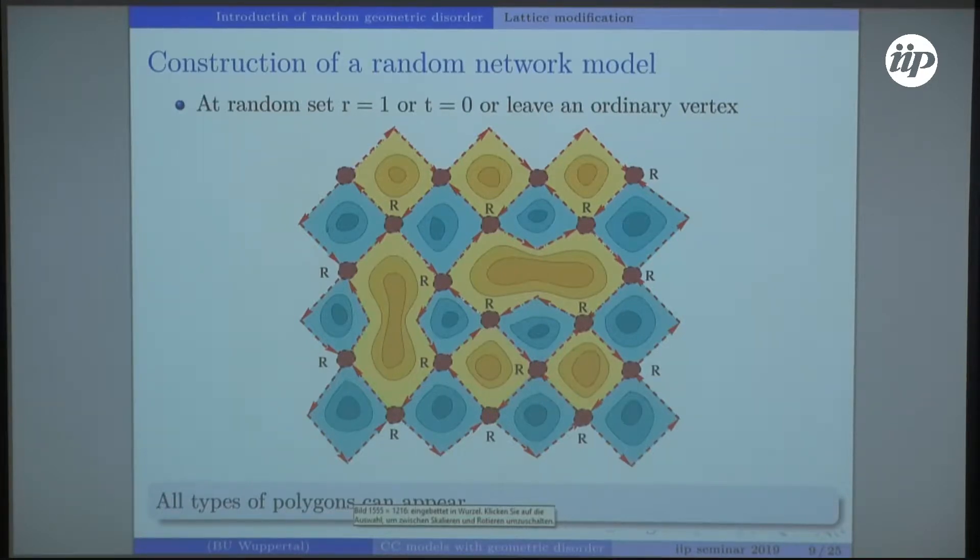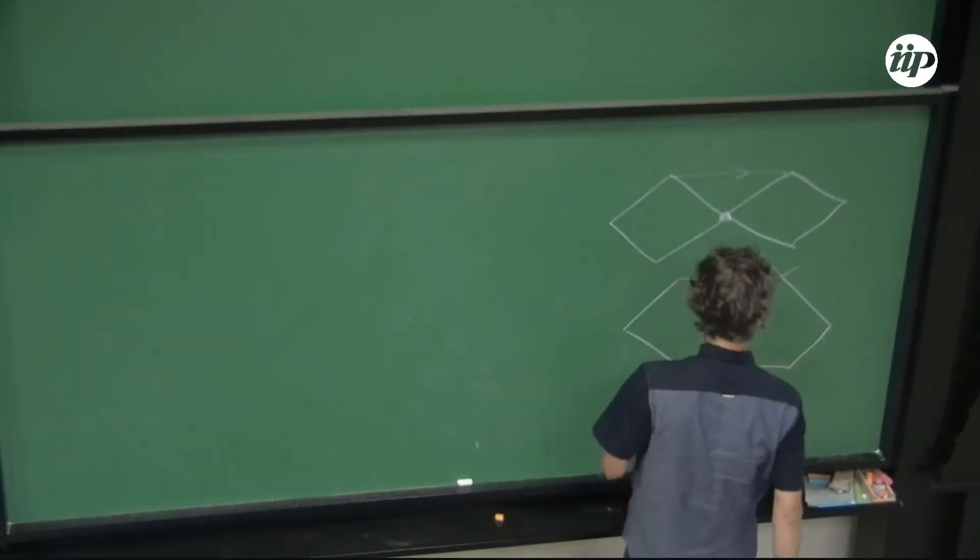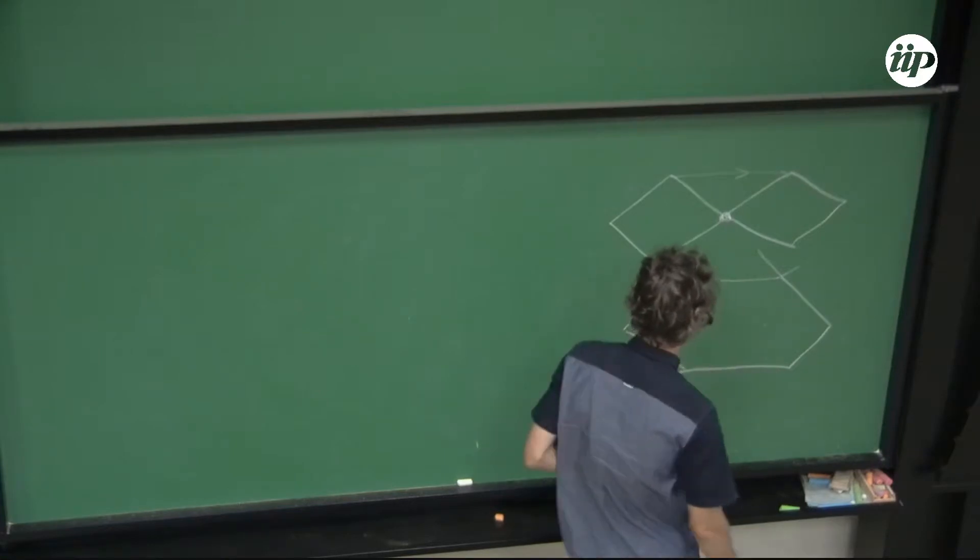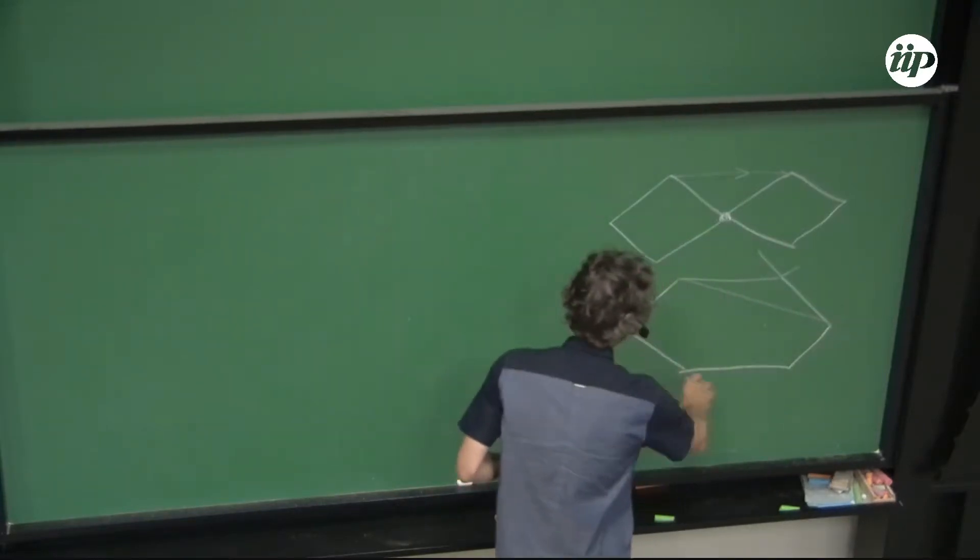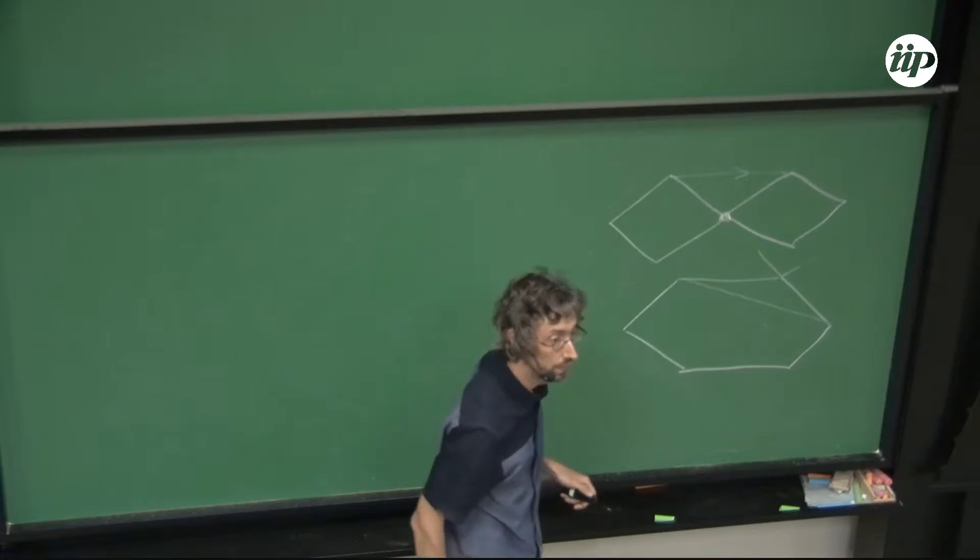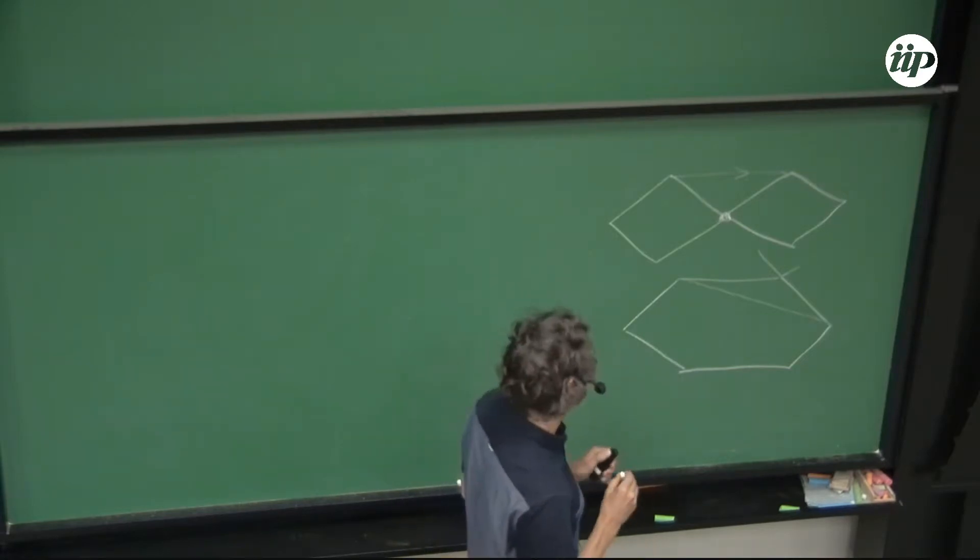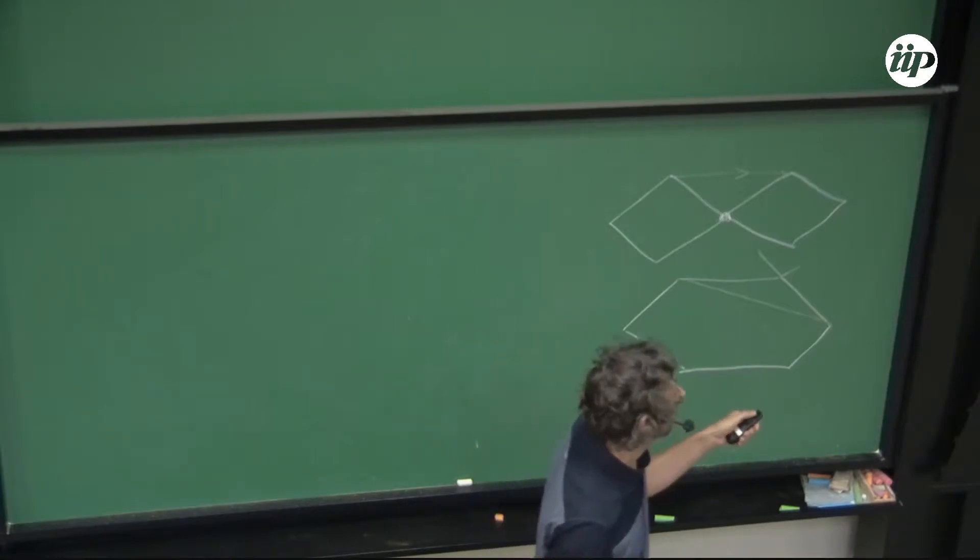Now imagine in this point we enforce the reflection. Then this edge is not really there anymore and we are left with five vertices. This way we can establish any polygon.